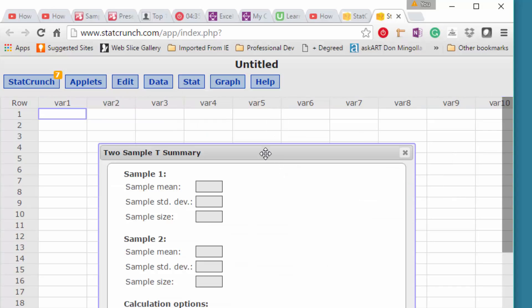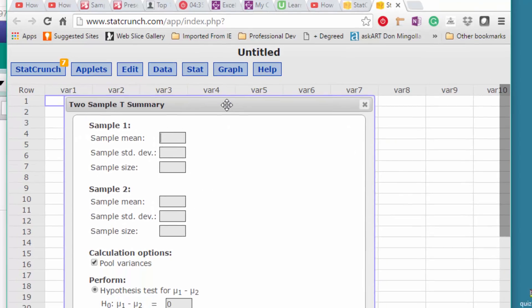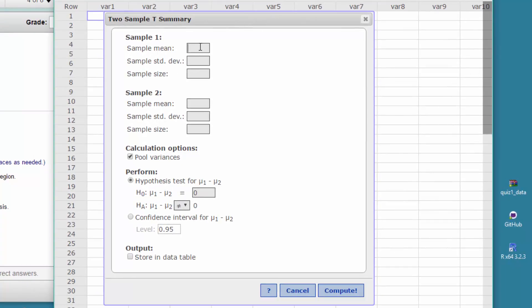We bring up this dialog box and we put in our data. X bar 1 is 2273, standard deviation for that sample is 174, the n is 15. Second mean is 2309, standard deviation is 50, and n is 8.